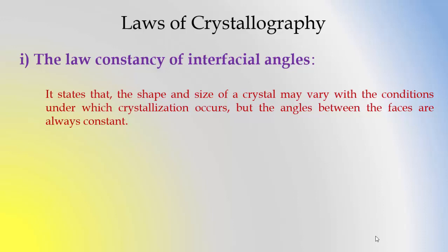That means depending upon the conditions in which crystallization occurs, the size and shape of the crystals may change, but the angles between the faces are always constant for a given crystal. The angles can be measured with the help of a goniometer.